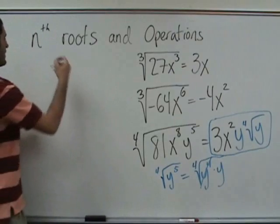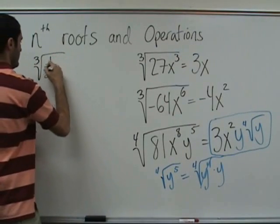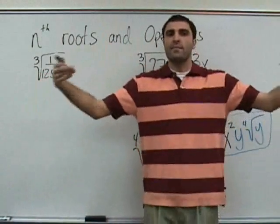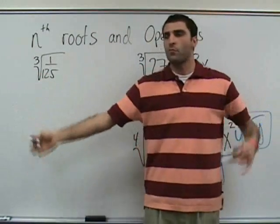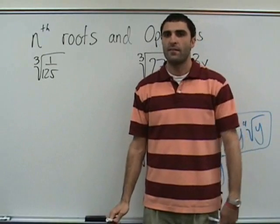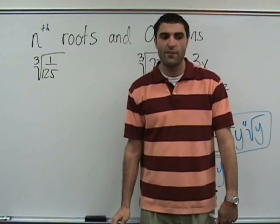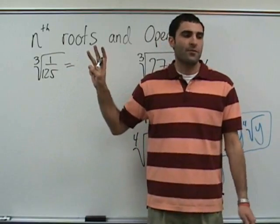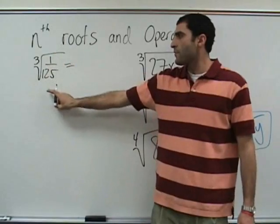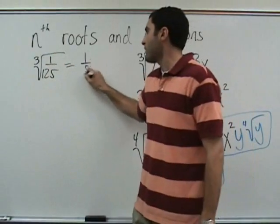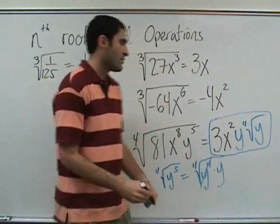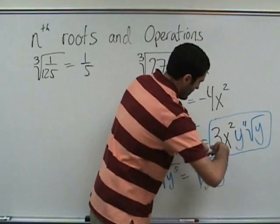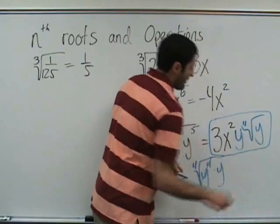There's one quick one — a little fraction exposure. What times what times what is 1/5 on the bottom? One-fifth times one-fifth times one-fifth. What number times itself three times gives us 1 over 5? 1 over 5. That fourth root goes to both numerator and denominator.